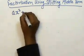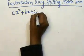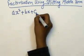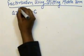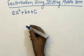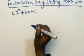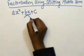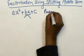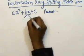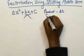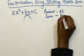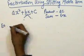A quadratic polynomial is of the type ax² + bx + c, whose highest power is 2, so its degree is 2. To factorize this kind of polynomial, we need to split the middle term such that the product of the two split terms equals AC, and the sum of the split terms equals bx.